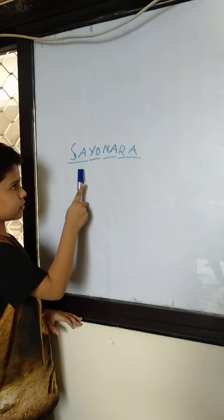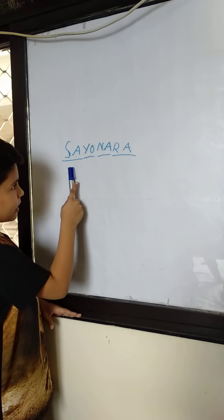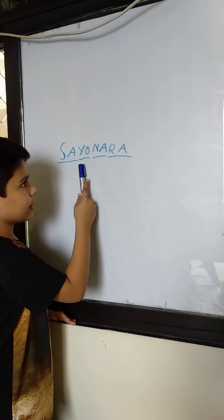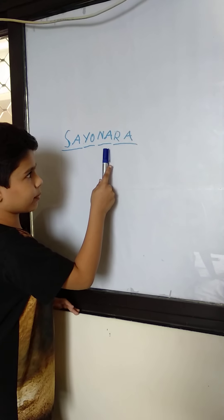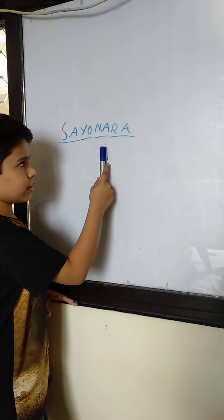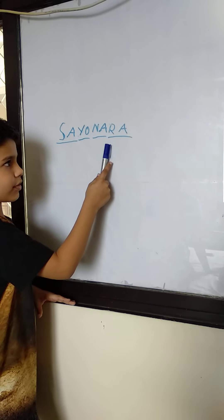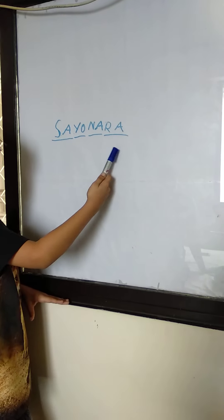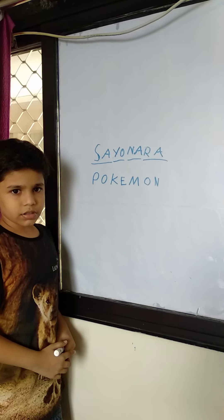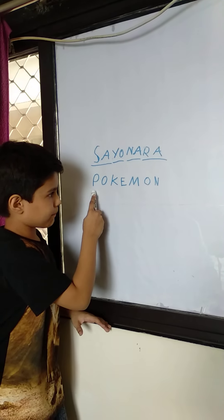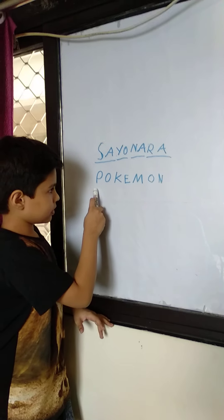This is one alphabet. Si is one alphabet. Yo is another alphabet. Na is another alphabet. Ra is the last alphabet. Another example is Pokemon.